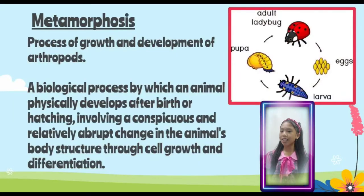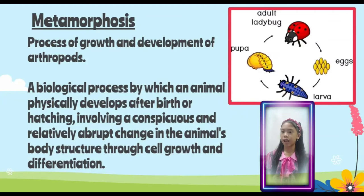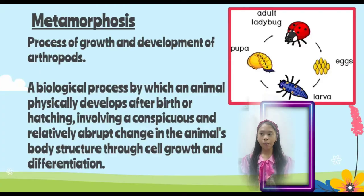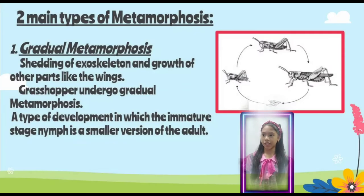Metamorphosis is the process of growth and development of arthropods — a biological process by which an animal physically develops after birth or hatching, involving a conspicuous and relatively abrupt change in the animal's body structure through cell growth and differentiation. There are two main types of metamorphosis: gradual metamorphosis and complete metamorphosis.